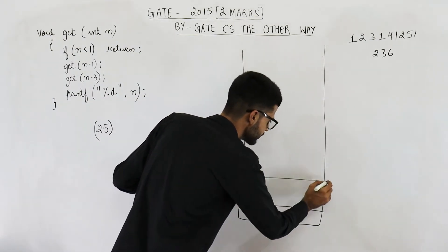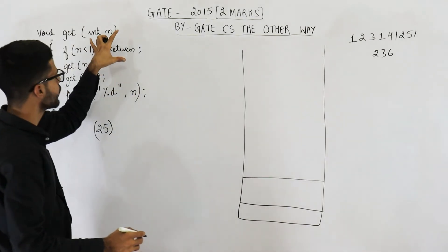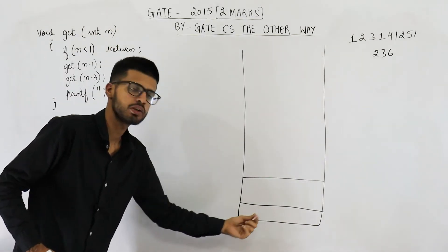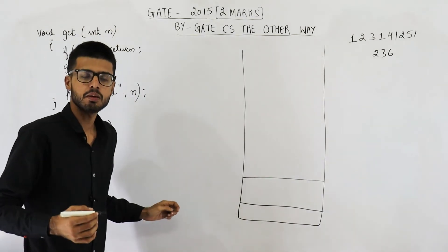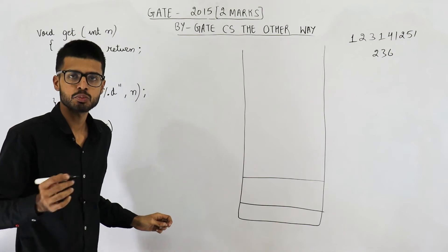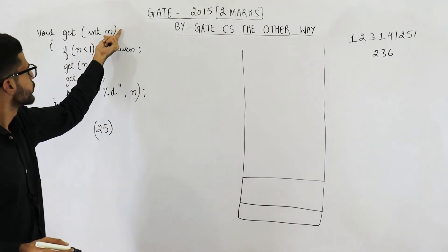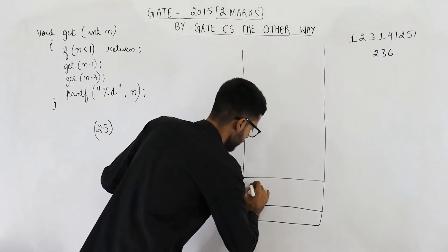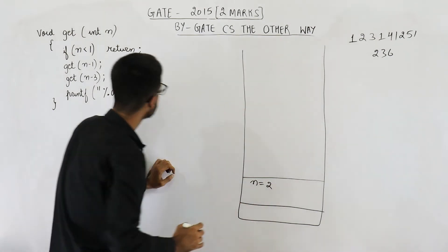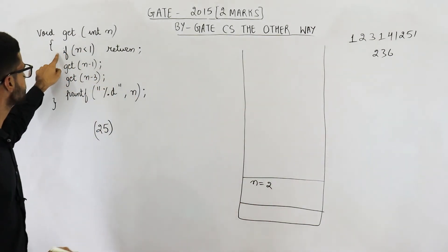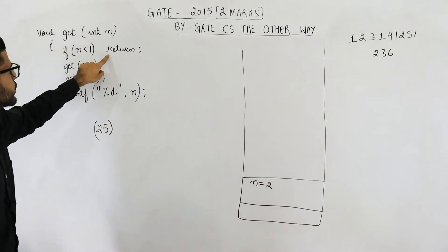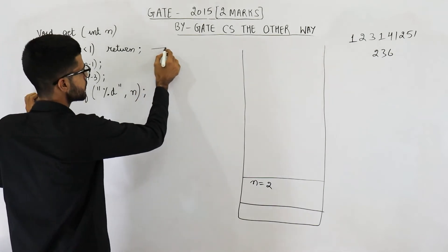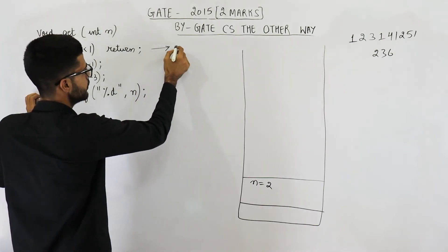So the activation record for get will be pushed because we have made a function call and the parameter passed is 2, so n gets value 2. Now the first line is executed. Let us label these lines: line i, line j, line k.